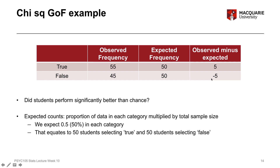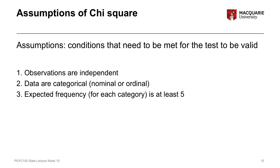Those expected frequencies are what we would expect to see under the null hypothesis — if the test proportions represent a 50/50 split, then the expected frequencies are 50 people in each category. Checking assumptions: observations are independent given our sampling design; our data is categorical — a dichotomous variable; and the expected frequencies for each category are at least five. Our expected frequencies were 50 for each category, so 50 is definitely greater than five, and all assumptions are met.